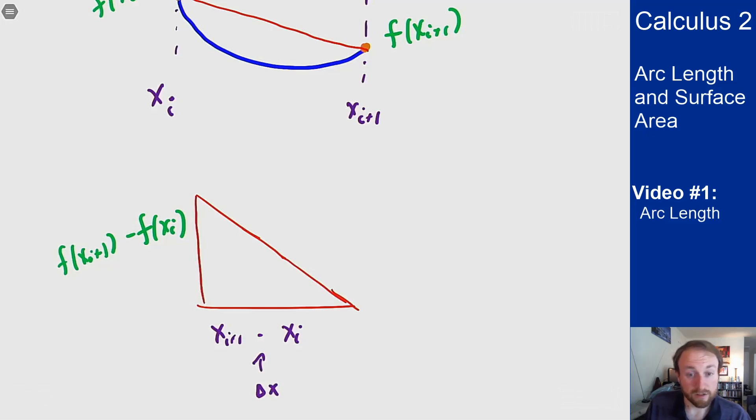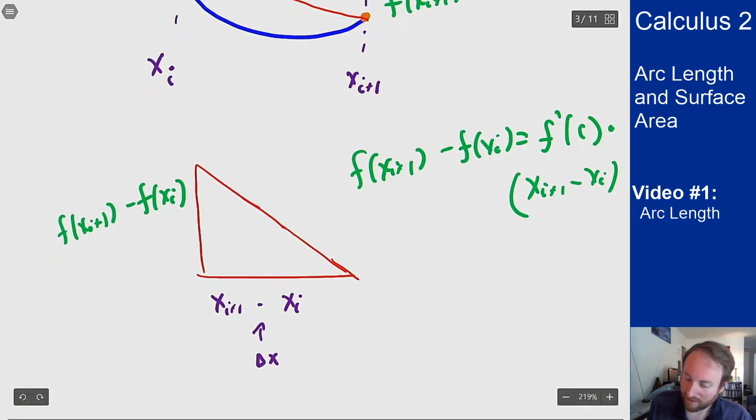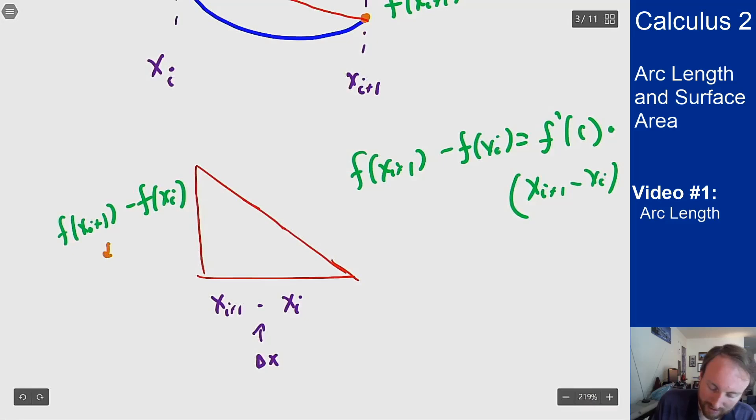For the vertical side, I can apply the mean value theorem assuming that f is differentiable on this interval. I can apply the mean value theorem to say that f(x_{i+1}) minus f(x_i) is f'(c) times (x_{i+1} minus x_i) where c is some point between x_{i+1} and x_i. This means I can rewrite this as f'(c) times delta x.